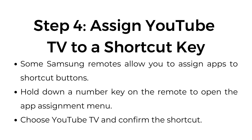Step number four: assign YouTube TV to a shortcut. Some Samsung remotes allow you to assign apps to shortcut buttons. Hold down a number key on the remote to open the app assignment menu, then choose YouTube TV and confirm the shortcut.